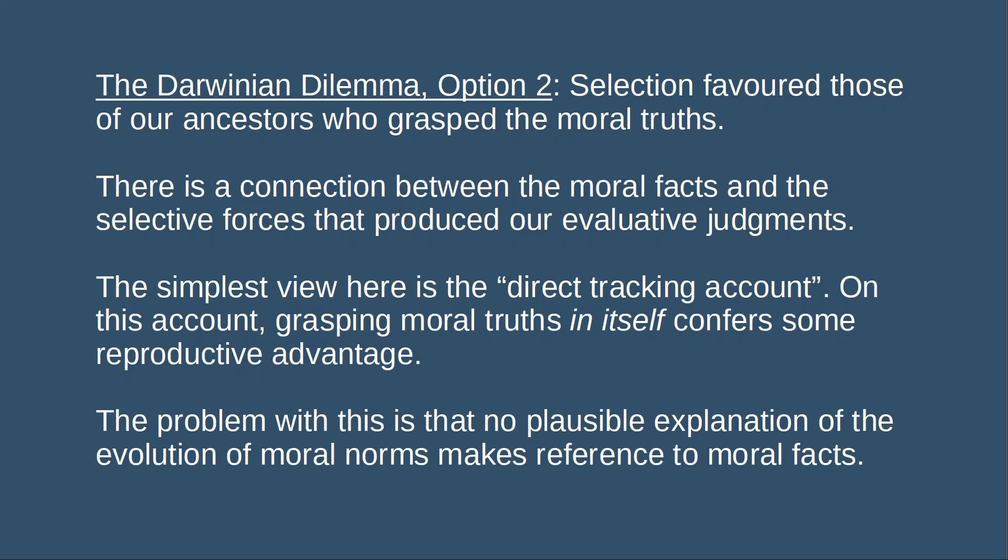The basic problem with the direct tracking account, Street thinks, is that the most plausible explanations of the evolution of our moral faculties just don't make any reference to purported moral facts. It's advantageous for a person to believe they ought to take care of their offspring, that they ought to behave cooperatively, and so on. If the moral facts were otherwise — if we had a moral obligation to kill our offspring instead — that would make no difference. The moral beliefs would have evolved in the same way.